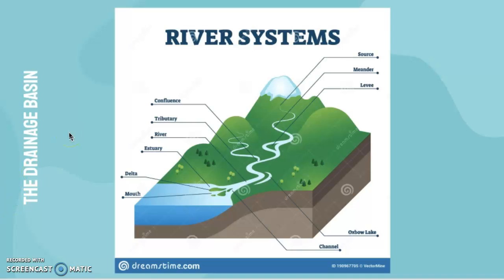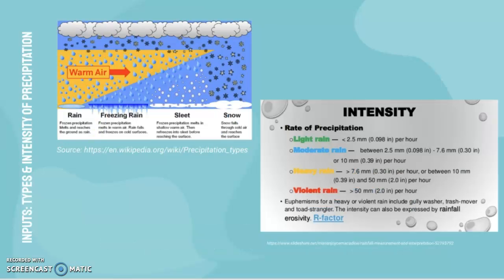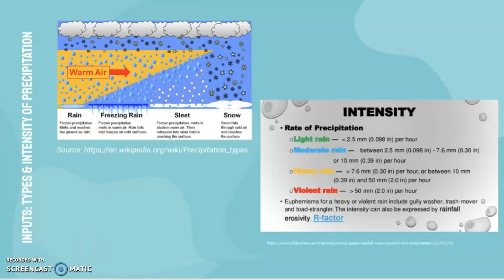The drainage basin is defined as the area drained by a river. Now we'll cover inputs. The types of precipitation are rain, freezing rain, sleet, and snow. The type of precipitation depends on the degree of warm air in the atmosphere — the warmer the air, the more likely it will be liquid rain. Direct precipitation into the channel is one of the key inputs into the river.